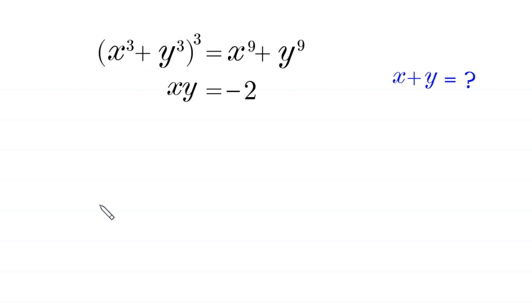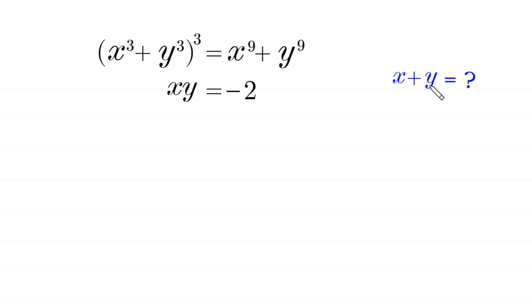Hello everyone, welcome to this tutorial. We will solve the system of equations: (x³ + y³)³ = x⁹ + y⁹, and xy = -2. Our job is to find all possible values of x + y.